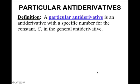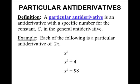Particular antiderivatives: a particular antiderivative is an antiderivative with a specific number for the constant C in the general antiderivative. For example, each of the following is a particular antiderivative of 2x: x squared, x squared plus 4, x squared minus 98, even x squared plus 1 million. All of those have the same derivative of 2x.